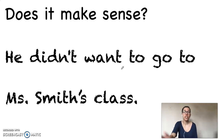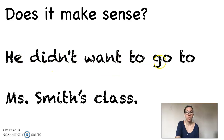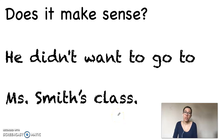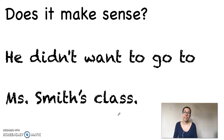Last but not least, we're going to check to see if our sentence makes sense. We've read this a couple of times now, but let's read it and think about whether we can make sense of it. He didn't want to go to Miss Smith's class. Makes sense to me. We're talking about somebody — we've used the pronoun 'he' to represent him — and we know he didn't want to go to Miss Smith's class. We could get more information, but by itself it does make sense. Our editing is all done and we've written a complete sentence that is fixed and edited correctly.